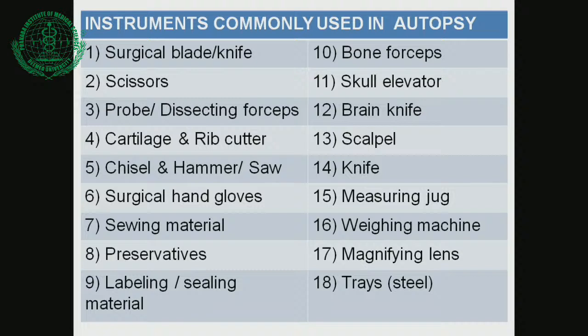The instruments used in the autopsy room include: surgical blade, knife, scissors, probes, dissecting forceps, cartilage and rib cutters, chisels and hammer, surgical hand gloves, swab material, preservatives, labeling and sealing material, bone forceps, skull elevator, brain knife, scalp knife, measuring jar, weighing machine, magnifying lens, and steel trays.